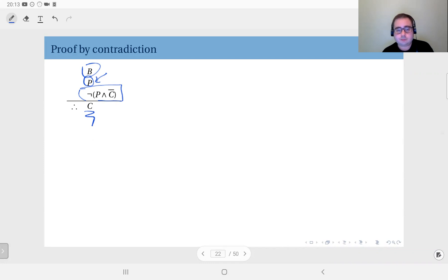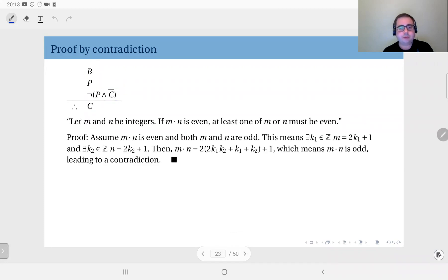forms a contradiction. So the conclusion follows from this. Here's a simple example: let m and n be integers. If m times n is even, at least one of m or n must be even.